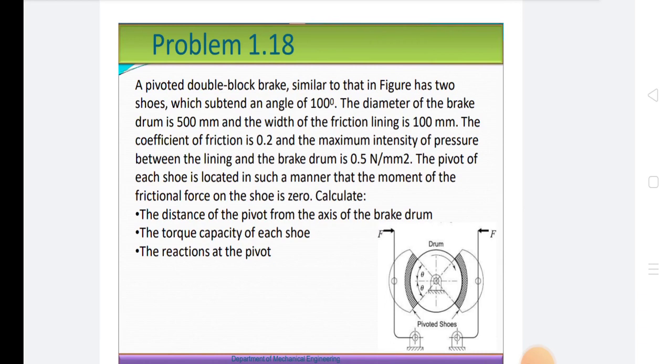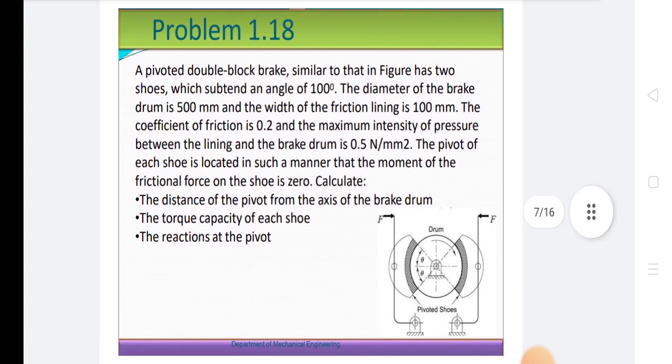A pivoted double block brake similar to that in figure has two shoes which obtain an angle of 100 degrees. The diameter of the brake drum is 500 mm and the width of the friction line is 100 mm. The coefficient of friction is 0.2 and the maximum intensity of pressure between the lining and the brake drum is 0.5 N/mm². The pivot of each shoe is located in such a manner that the moment of the frictional force on the shoe is zero. Calculate the distance of the pivot from the axis of the brake drum, the torque capacity of each shoe, and the reactions at the pivot.